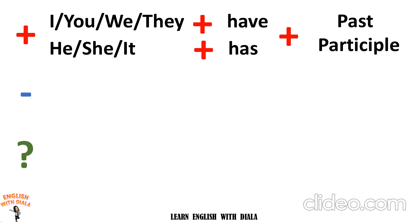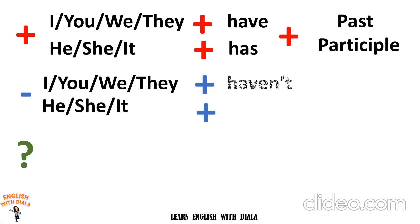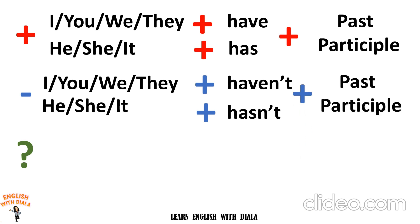For the negative form, we need to add the subjects. We add to them 'haven't' or 'hasn't', in addition to the past participle form of the verb.